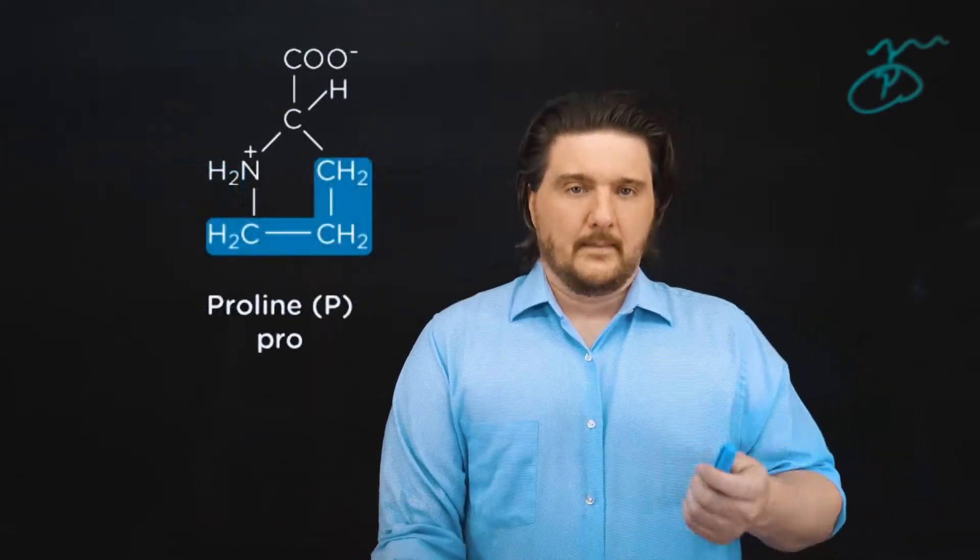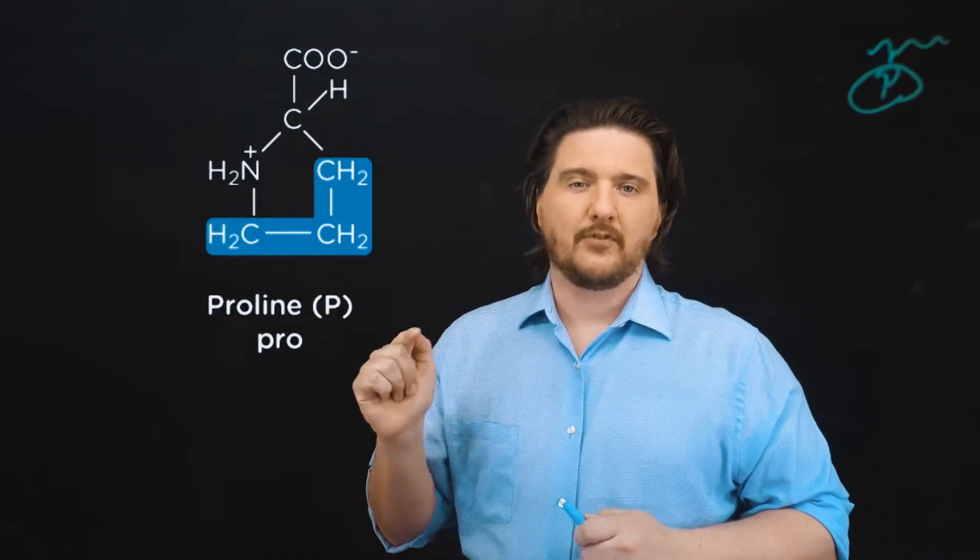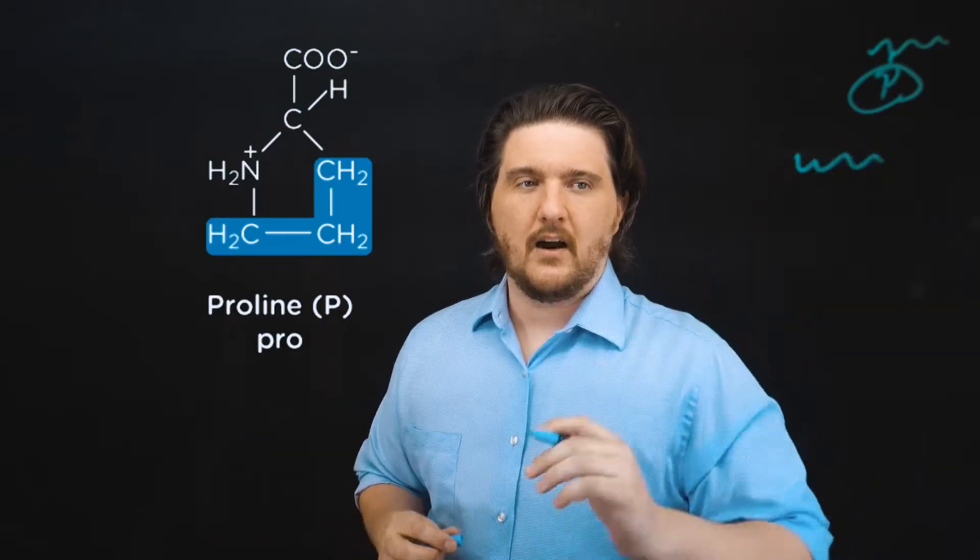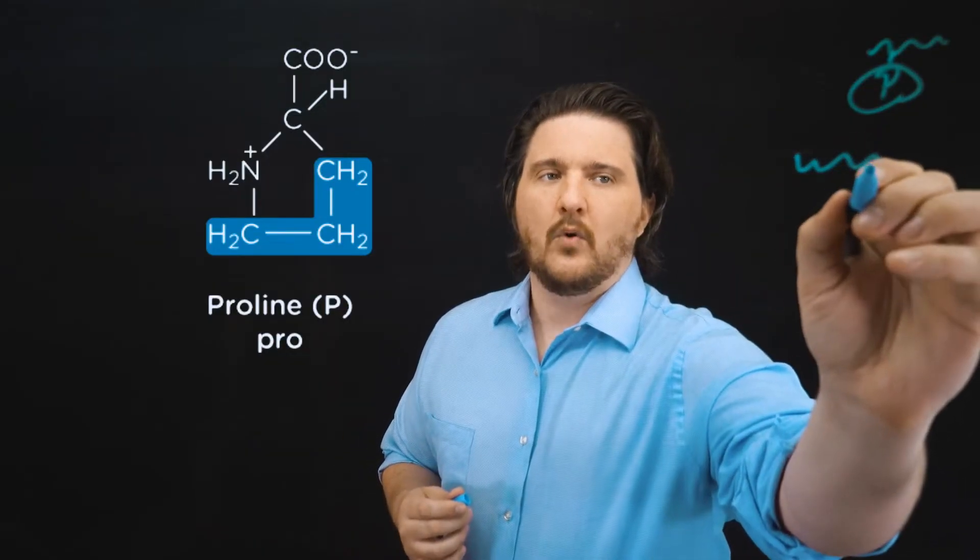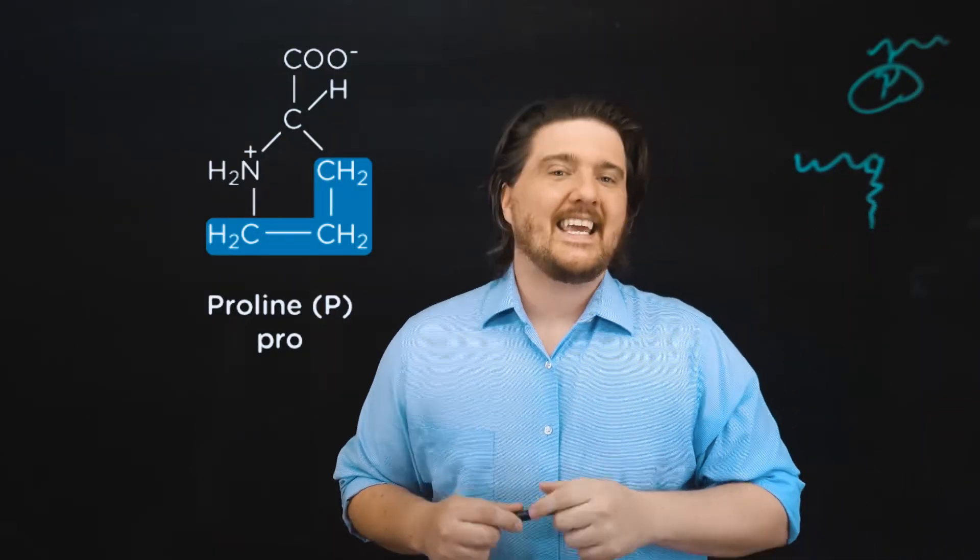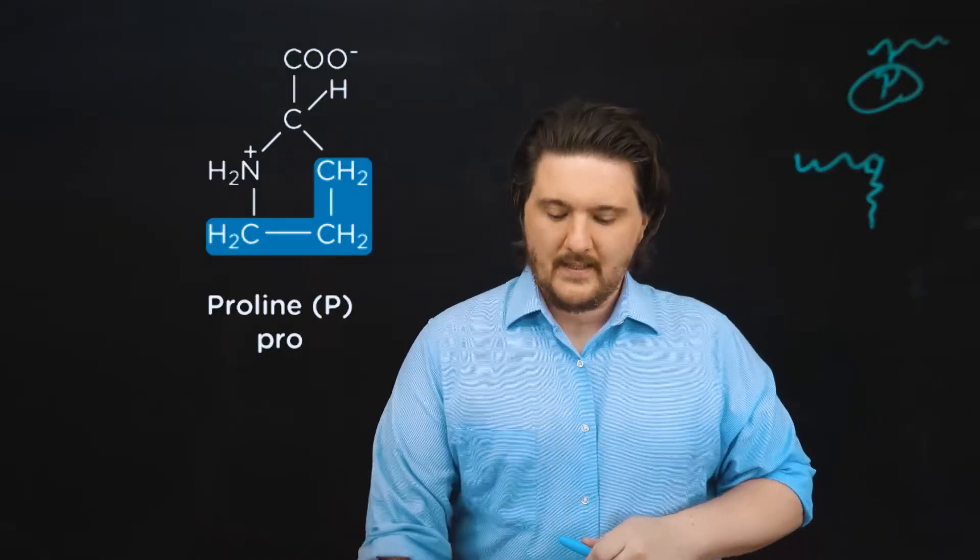So talking about proline, it's kind of interesting because the R group actually reaches around and grabs on to the amino backbone. So if we have a chain of proteins, a chain of amino acids, and we introduce a proline, what happens is it reaches around and grabs on to the chain and creates a kink. Proline is the kinky amino acid. That's an easy way to remember it.